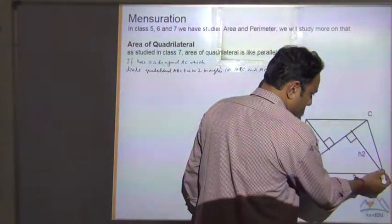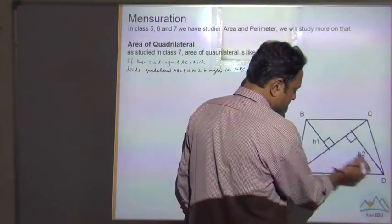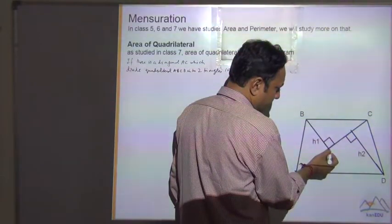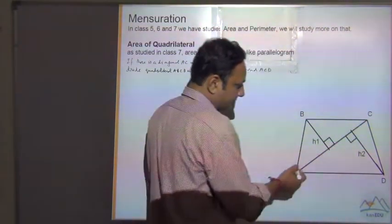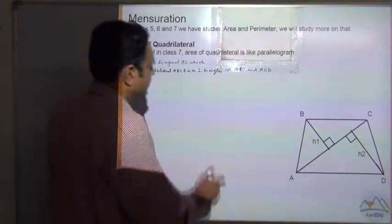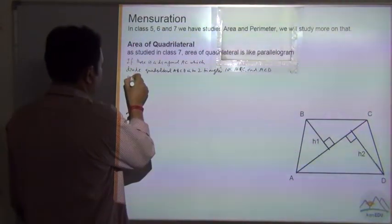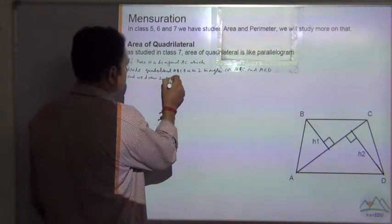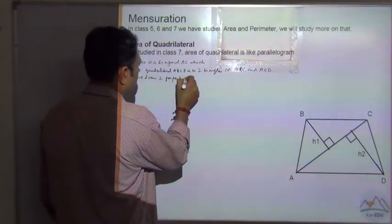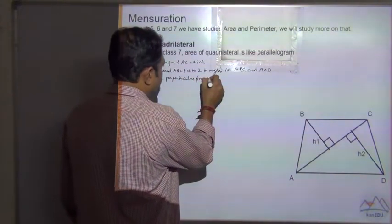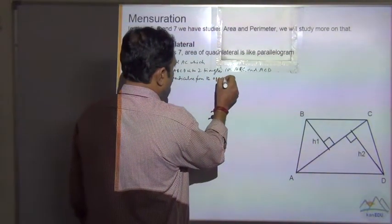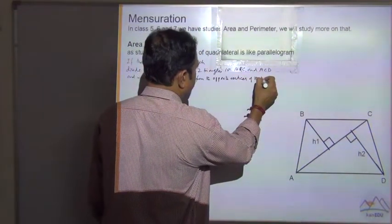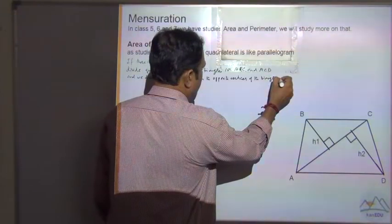Say if we draw a perpendicular on this diagonal, which is H2, and from this vertex B, we draw a perpendicular H1 on this diagonal AC.